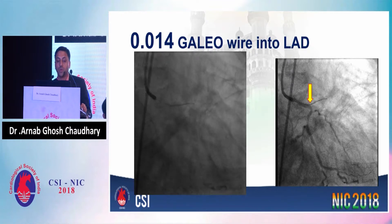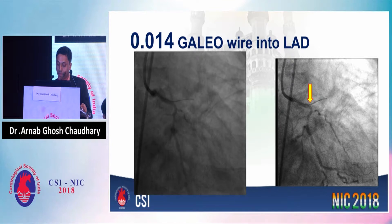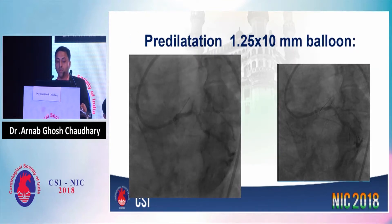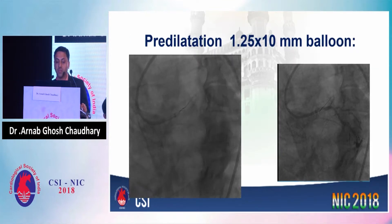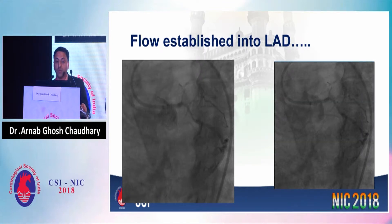In the left shoot, we can see that a 0.014-inch Galio wire was introduced into the LAD, and pre-dilatation was done with a 1.25 × 10 mm balloon at 6 atm of pressure. After pre-dilatation, some flow was established into the LAD.